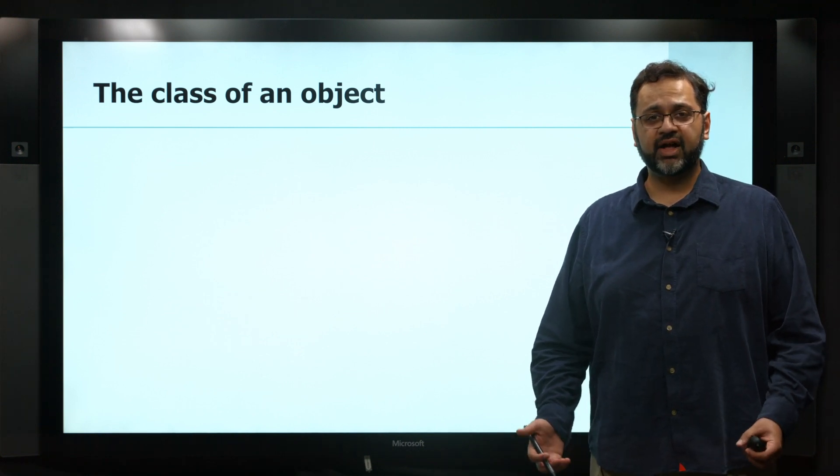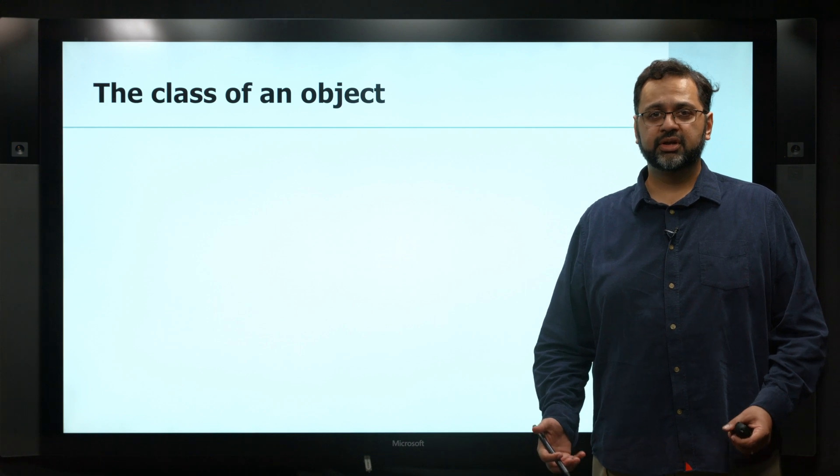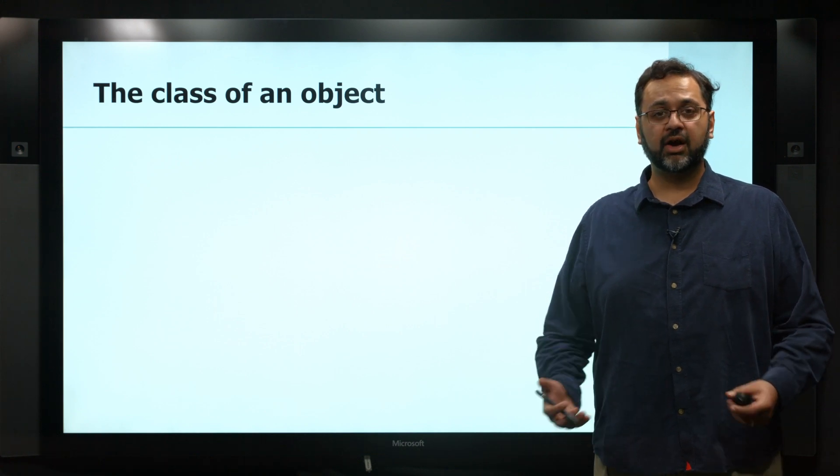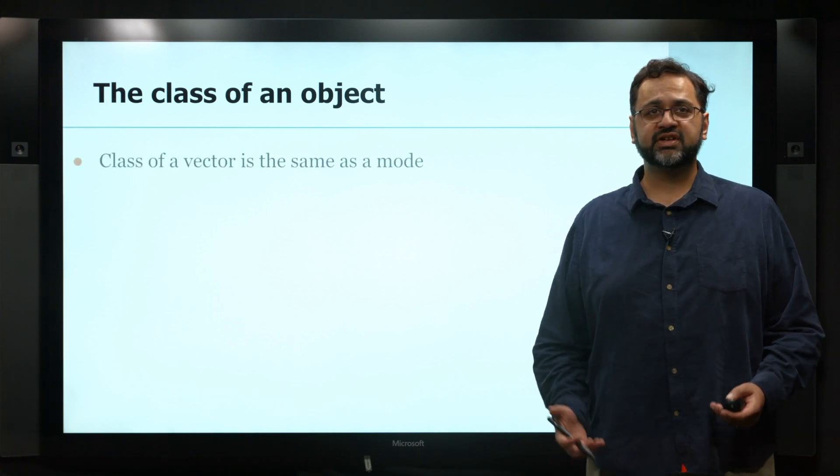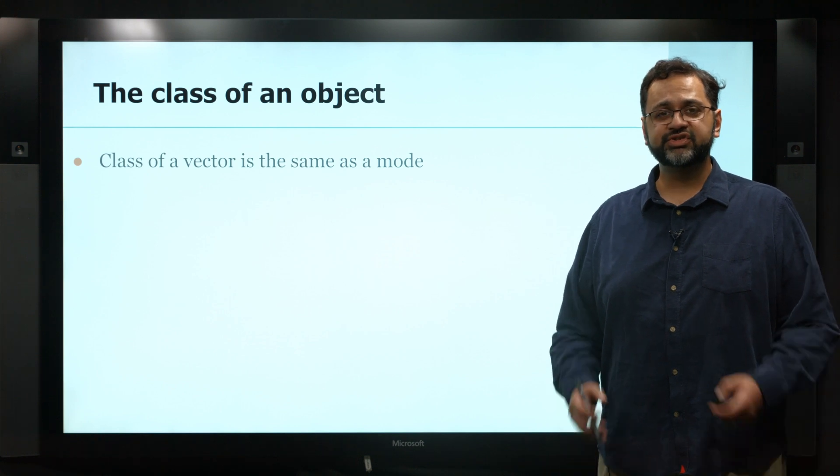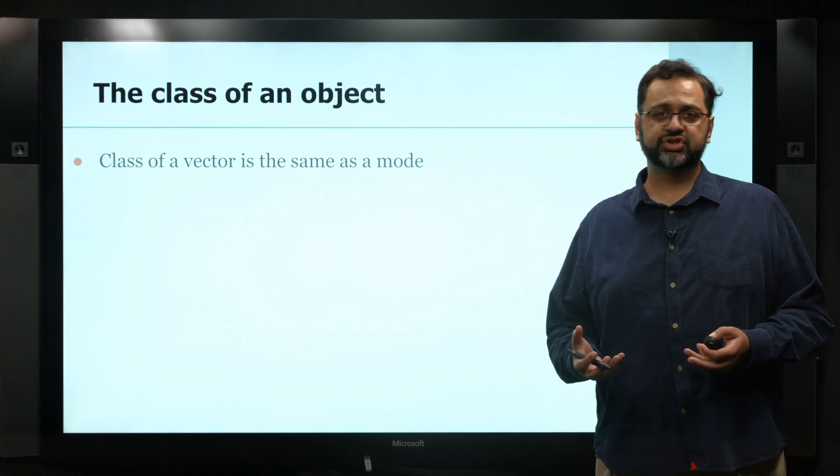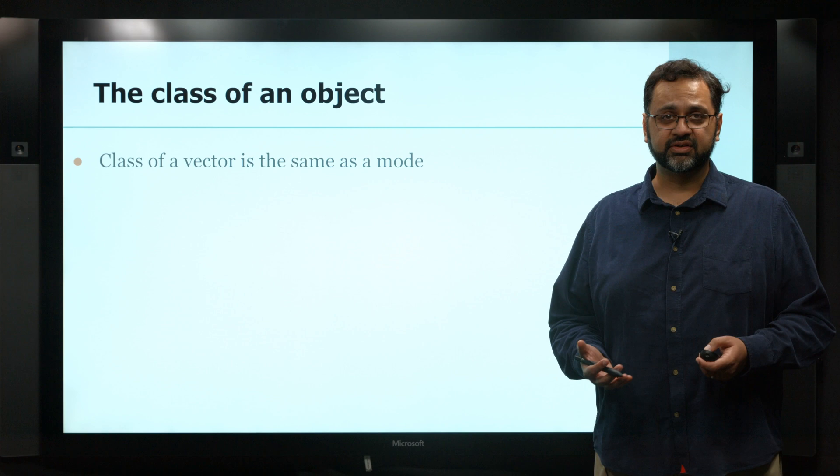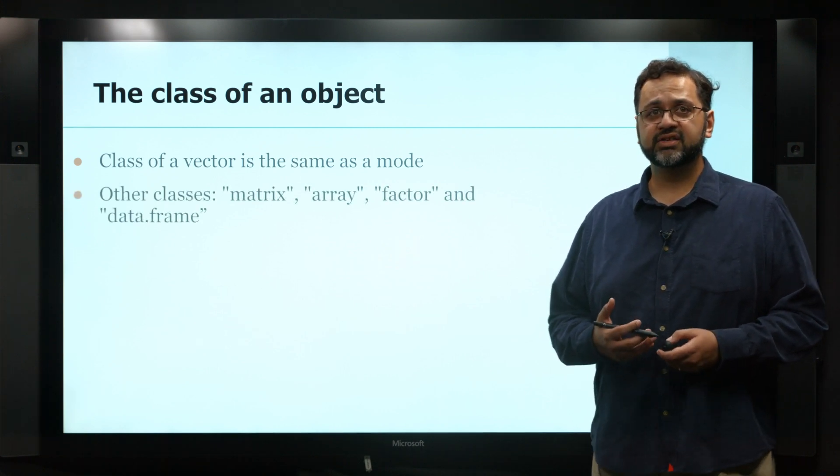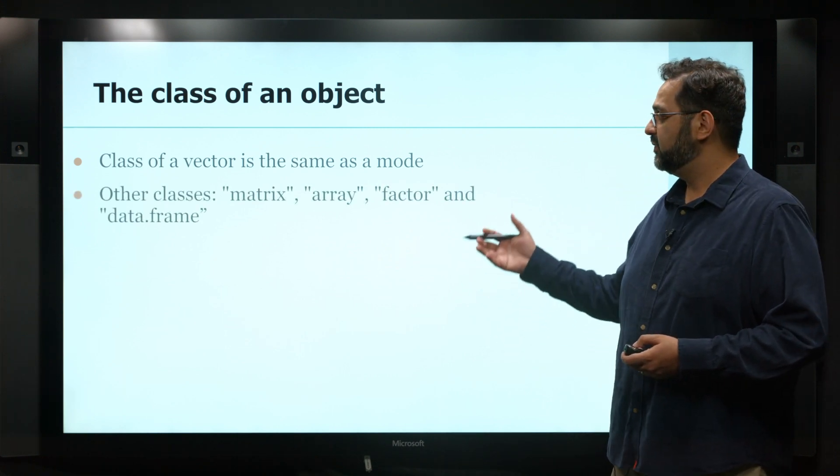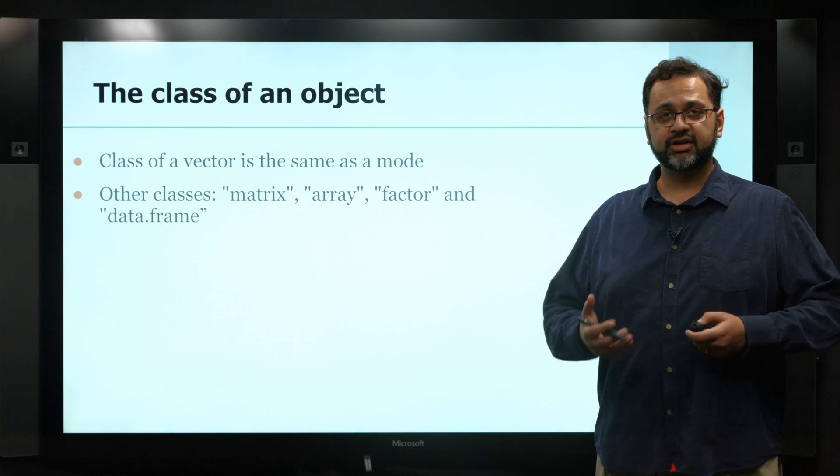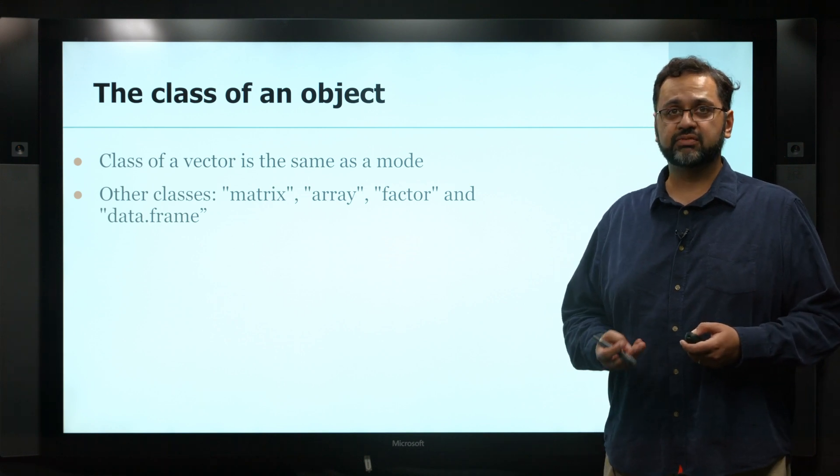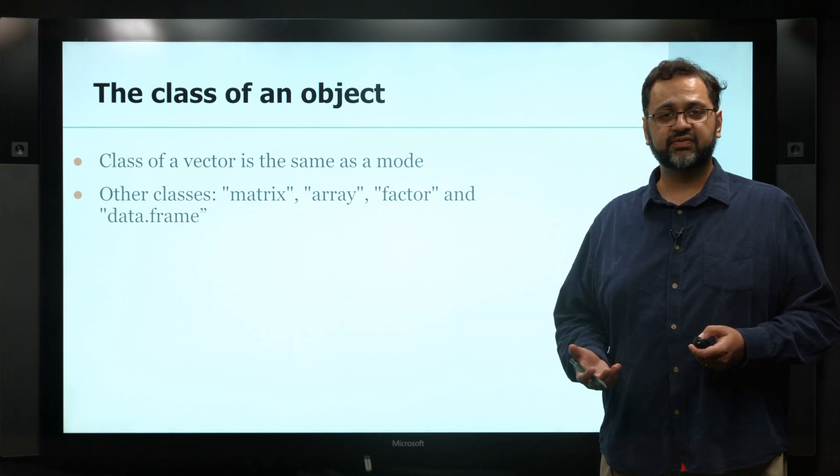We talked about the different types of values that can be stored in R objects. The class of an object determines how we store them. The simplest storage for R is a vector, which is essentially just a sequence of things. Other classes that are more higher dimensional include matrices, arrays, factors, data frames, and lists. We'll go through each one to see how they're different and what role they can play in our workflow.